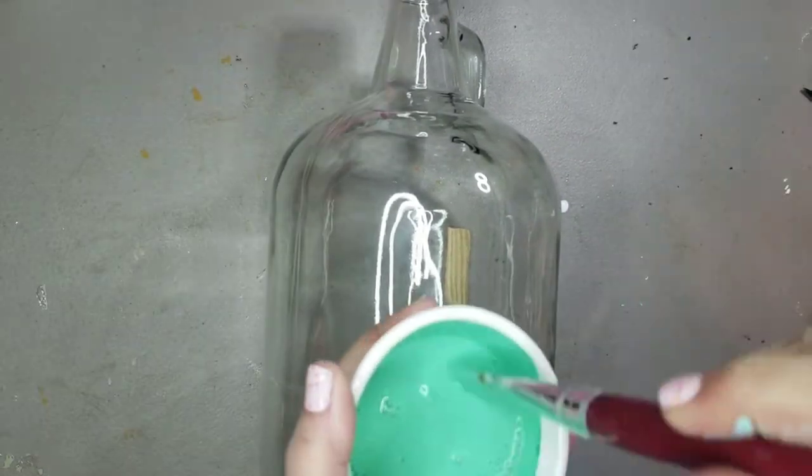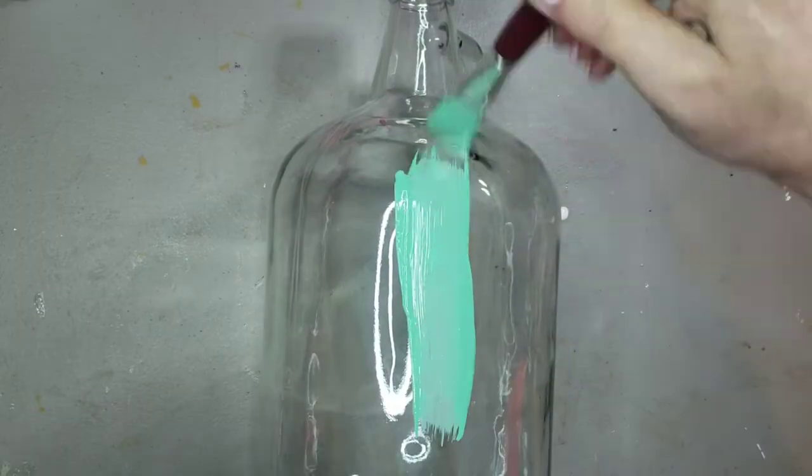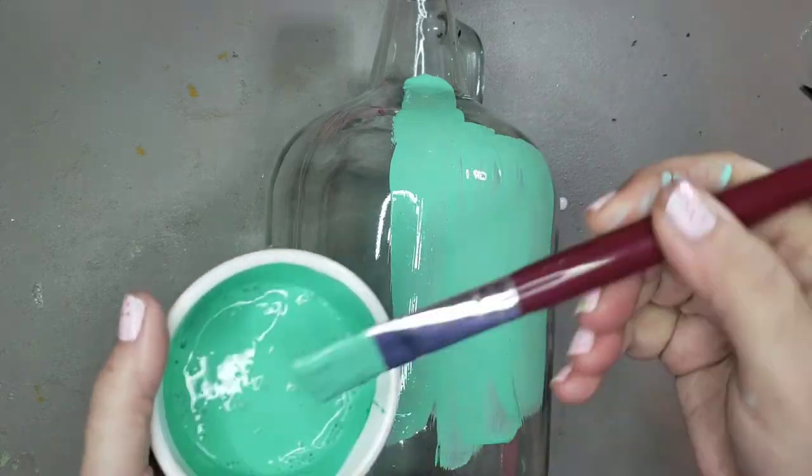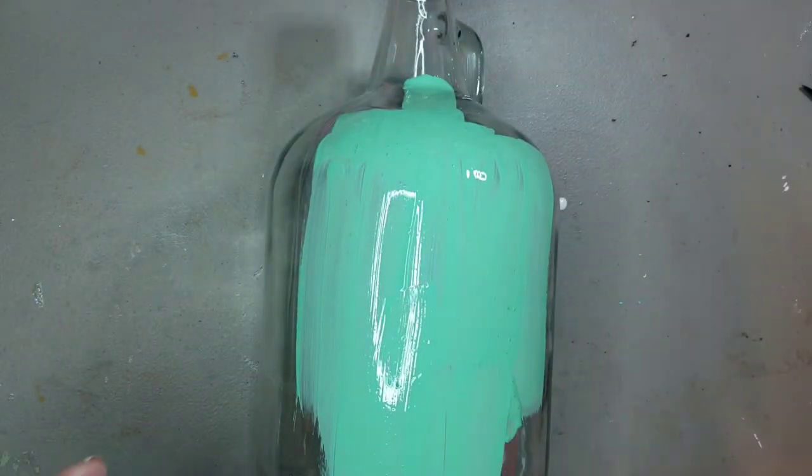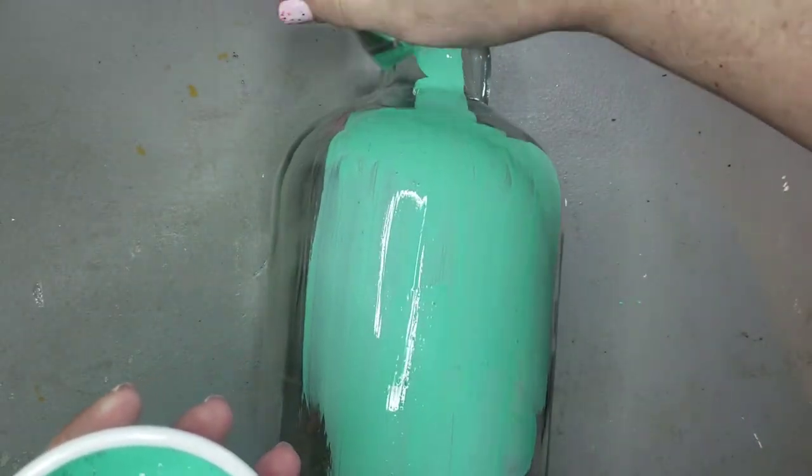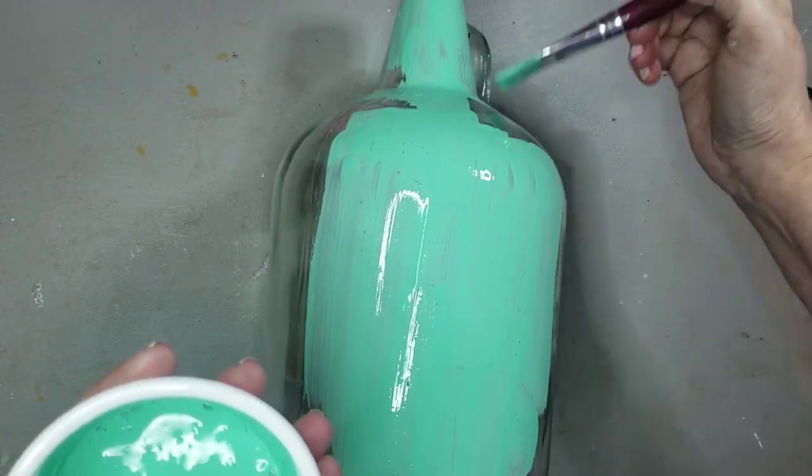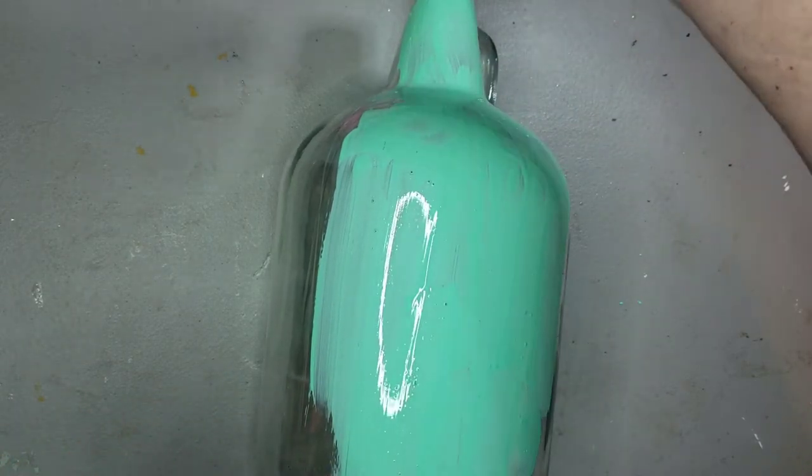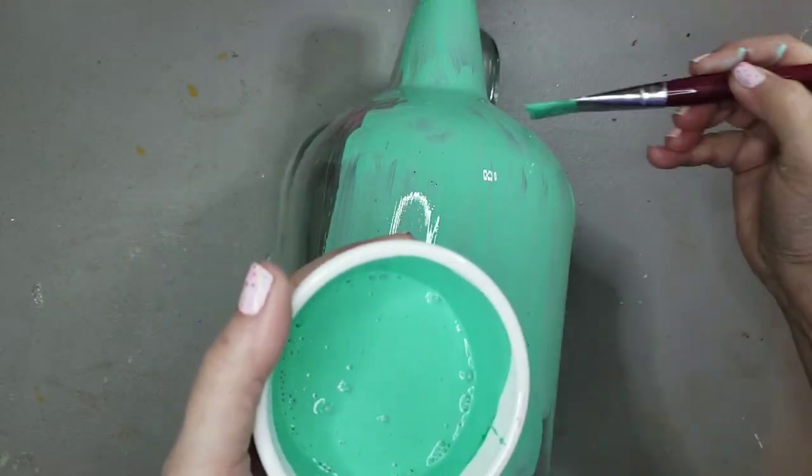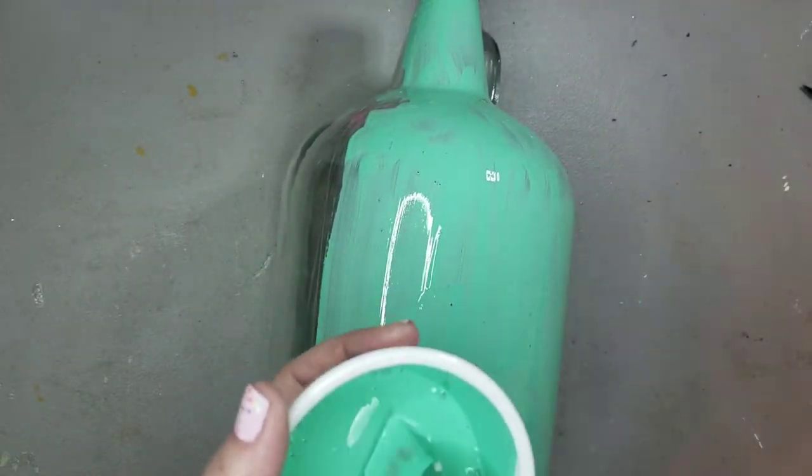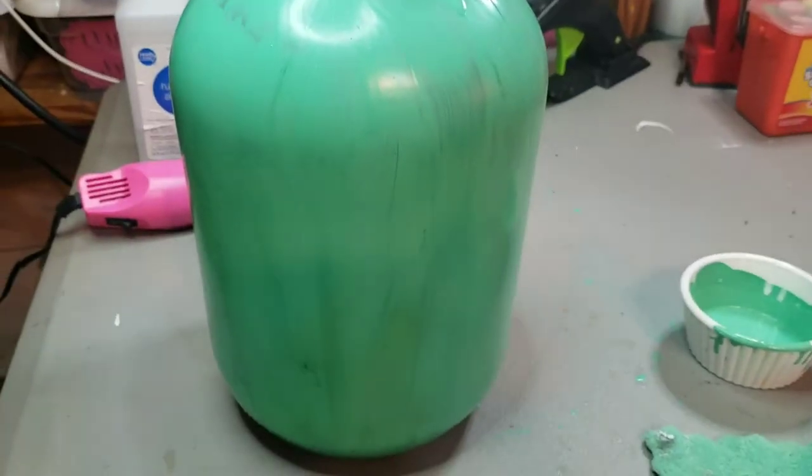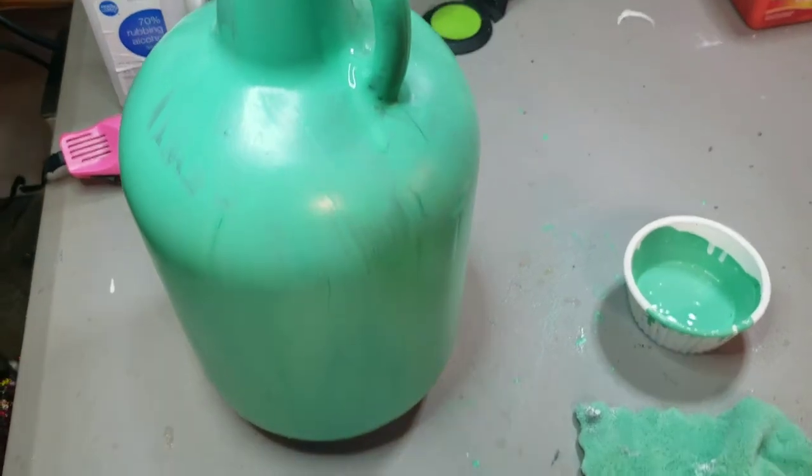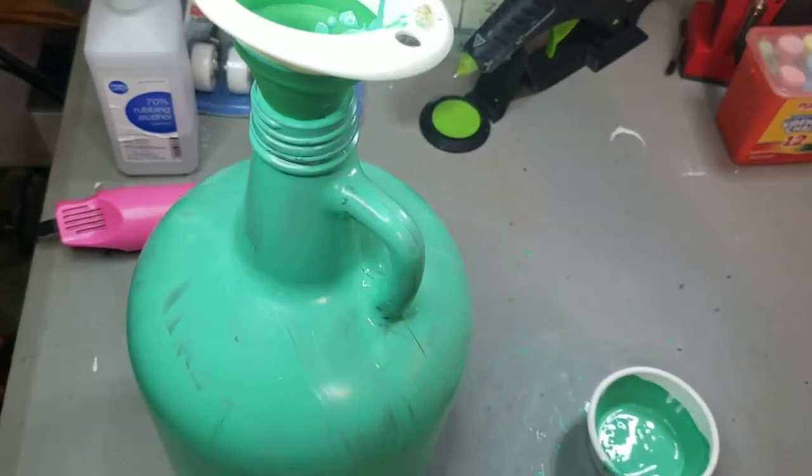Now in my mind with that much Mod Podge this should dry translucent. However it did not dry translucent. It was more opaque. Hmm is that a word for you can't see through it? Whatever. Anyway all this is going to be going away because once it started drying it looks like this. That's not the look that I was going for even though that's kind of cute. I'm going to redo this.